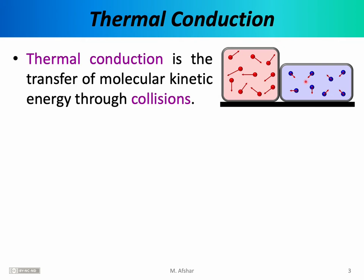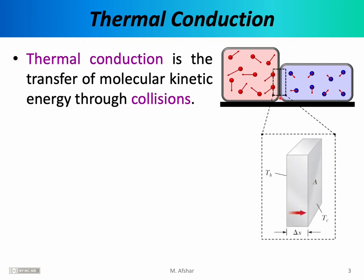For thermal conduction to happen, there needs to be physical contact between two objects, allowing the molecules of one object to collide with the molecules of the other, thereby transferring thermal energy. If the two objects are at the same temperature, they are in thermal equilibrium and there is no transfer of thermal energy. Thermal conduction happens when one object is hotter than the other. For a deeper understanding, we need to focus on the boundary between the two objects — it's at this boundary that the collisions are actually happening.